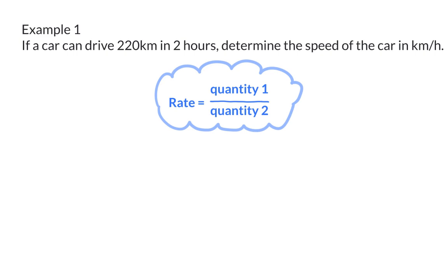In this case, the rate that we want to determine is the speed. And all we need to do is divide the two quantities. The speed is measured in km per hour.